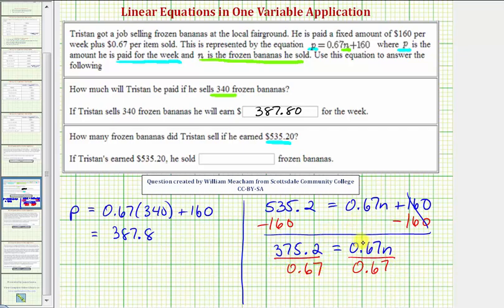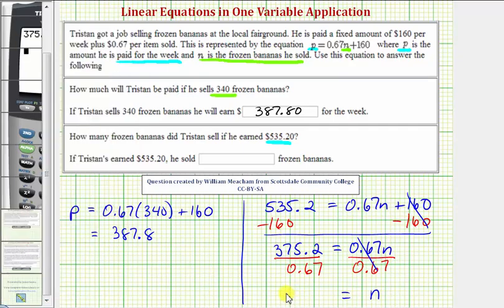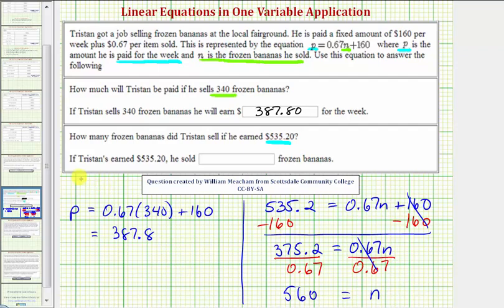Notice on the right side, this simplifies to one N or just N. And now we'll find this quotient on the calculator. We have 375.2 divided by 0.67, which equals 560. This means if Tristan earned $535.20, he sold 560 frozen bananas. I hope you found this helpful.